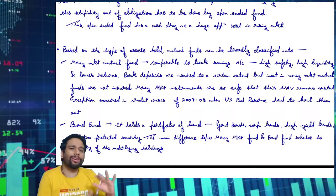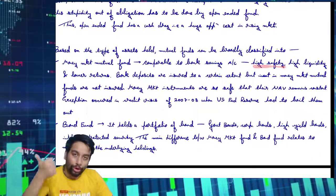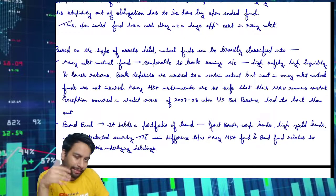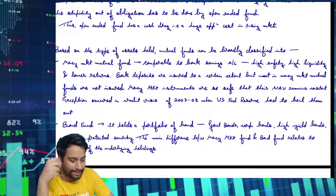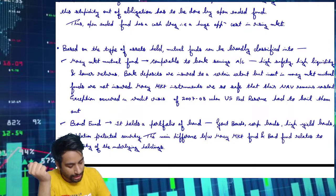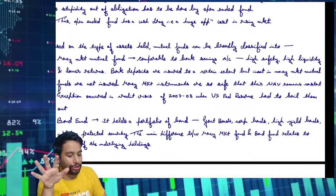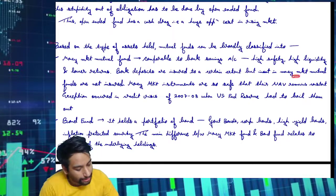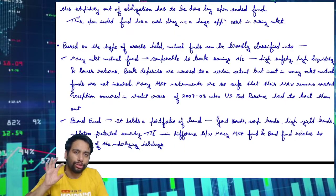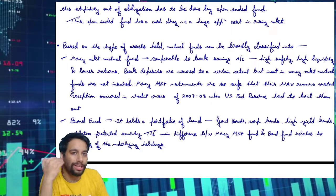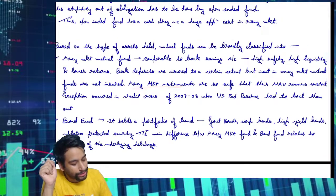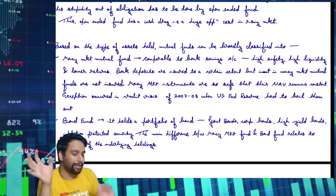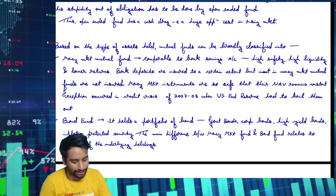It is comparable to a bank savings account — normal decent returns, very high safety. Either you can take safety or profitability — more profit means more risk, more risk means less safety and vice versa. High liquidity — you can buy and sell easily at fair price — and lower returns. Bank deposits are insured to a certain extent, like in India up to 5 lakh rupees. But in money market mutual funds they are not insured, so they are slightly disadvantageous compared to banks — though they offer slightly higher returns than banks.